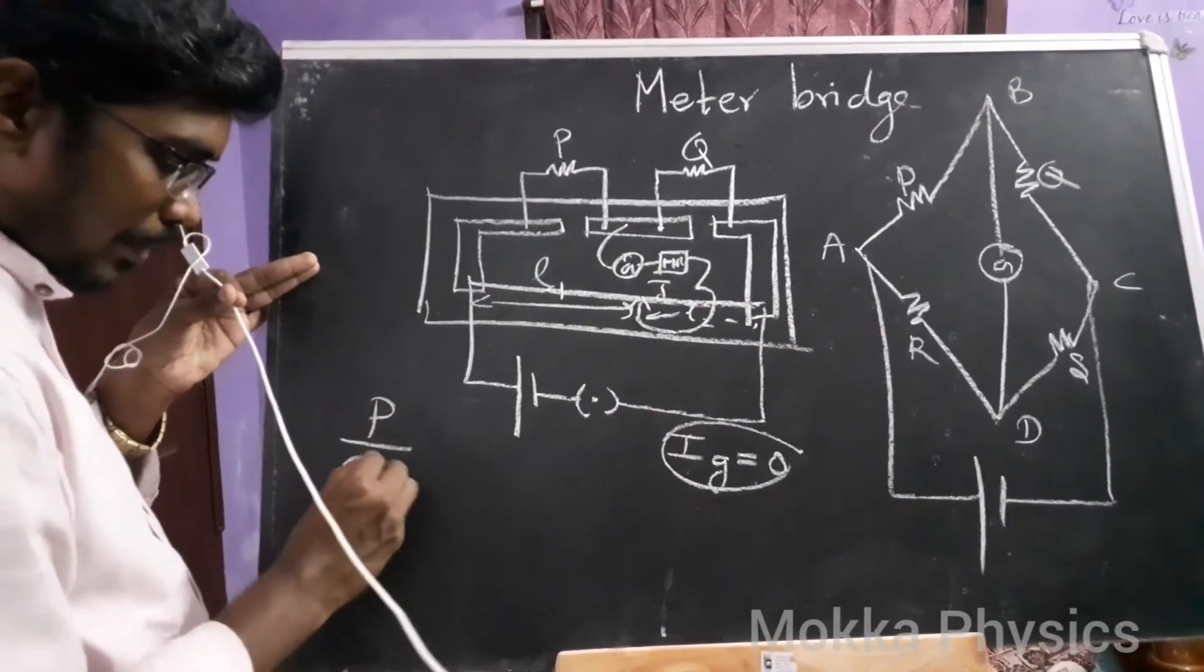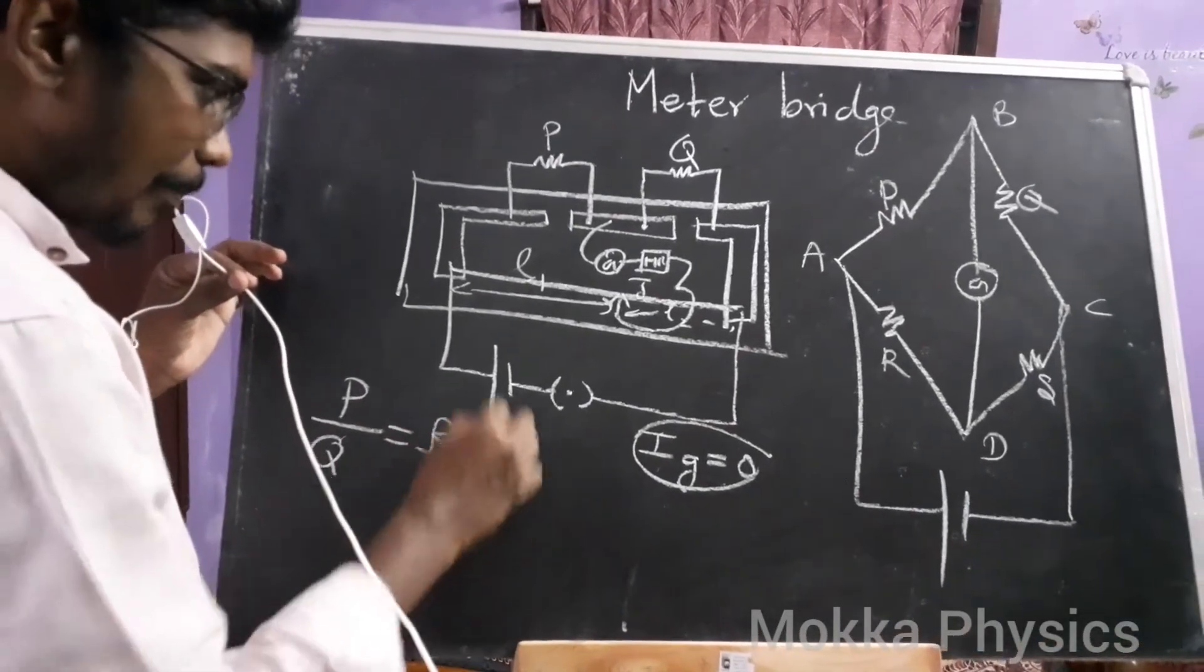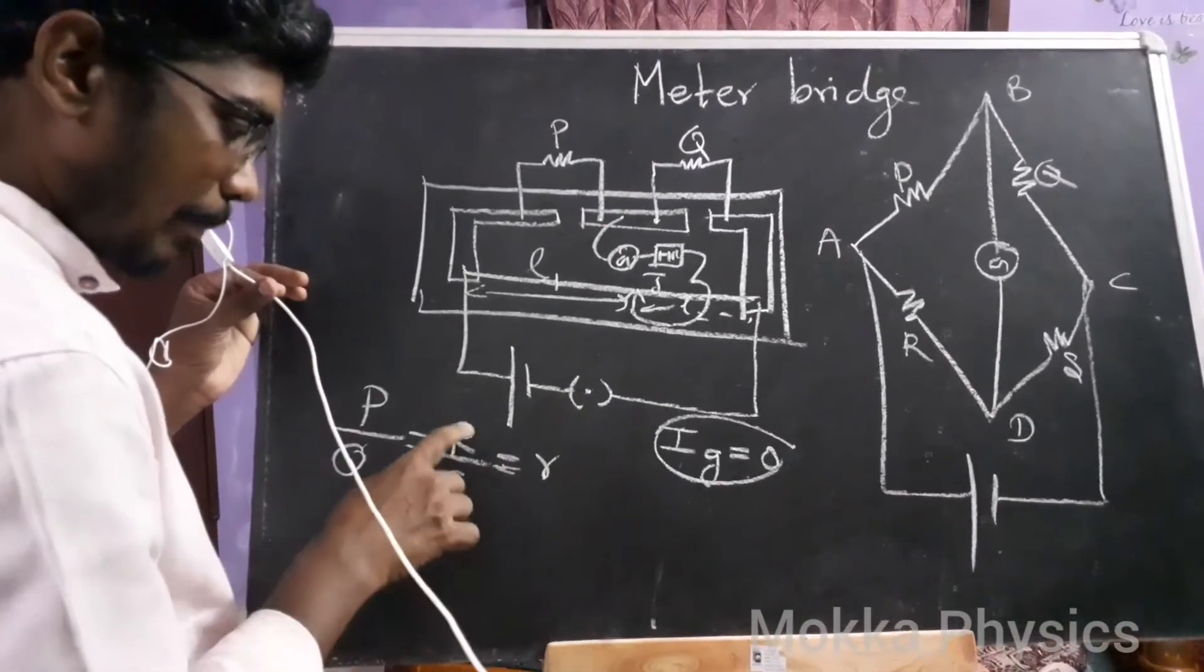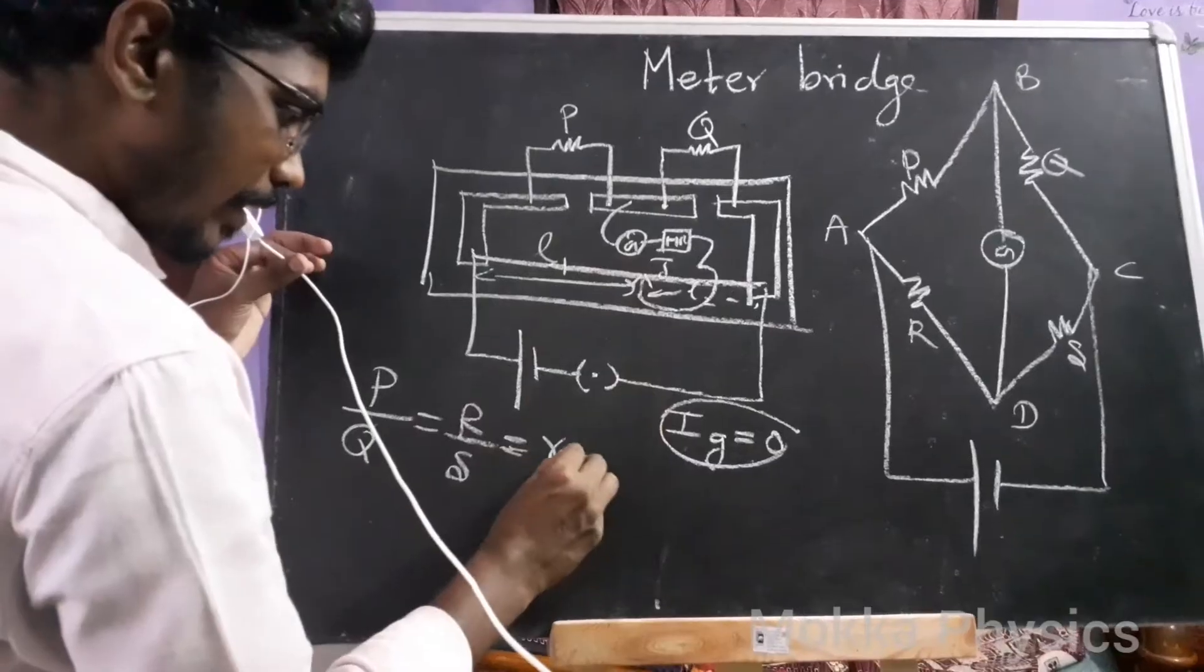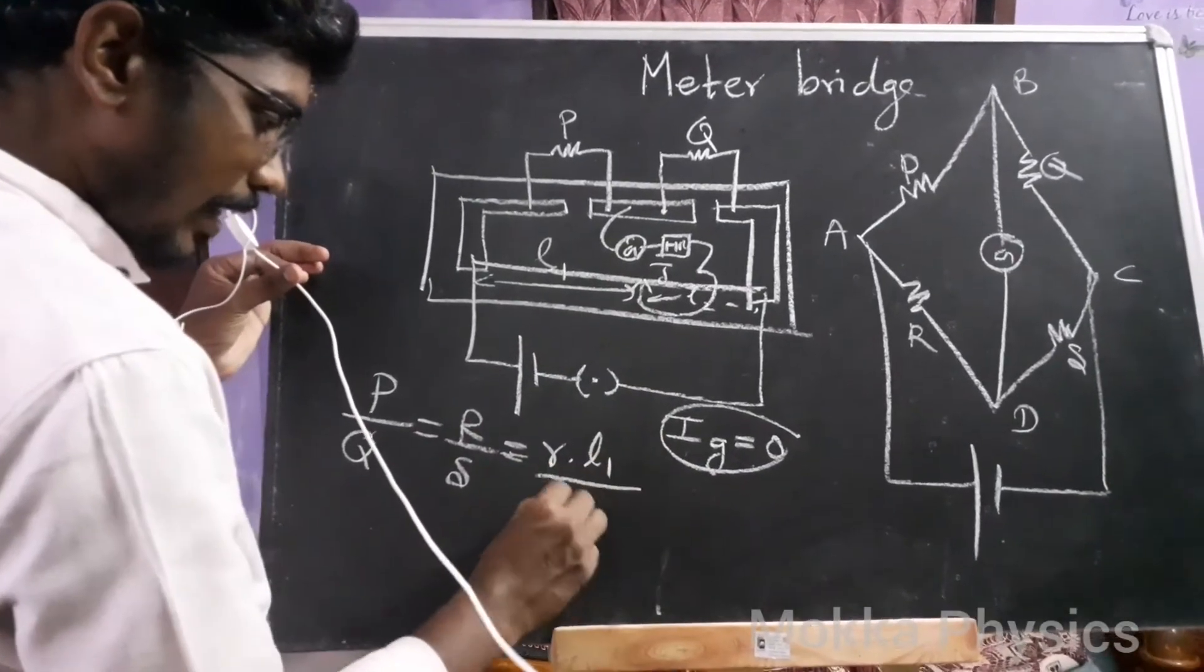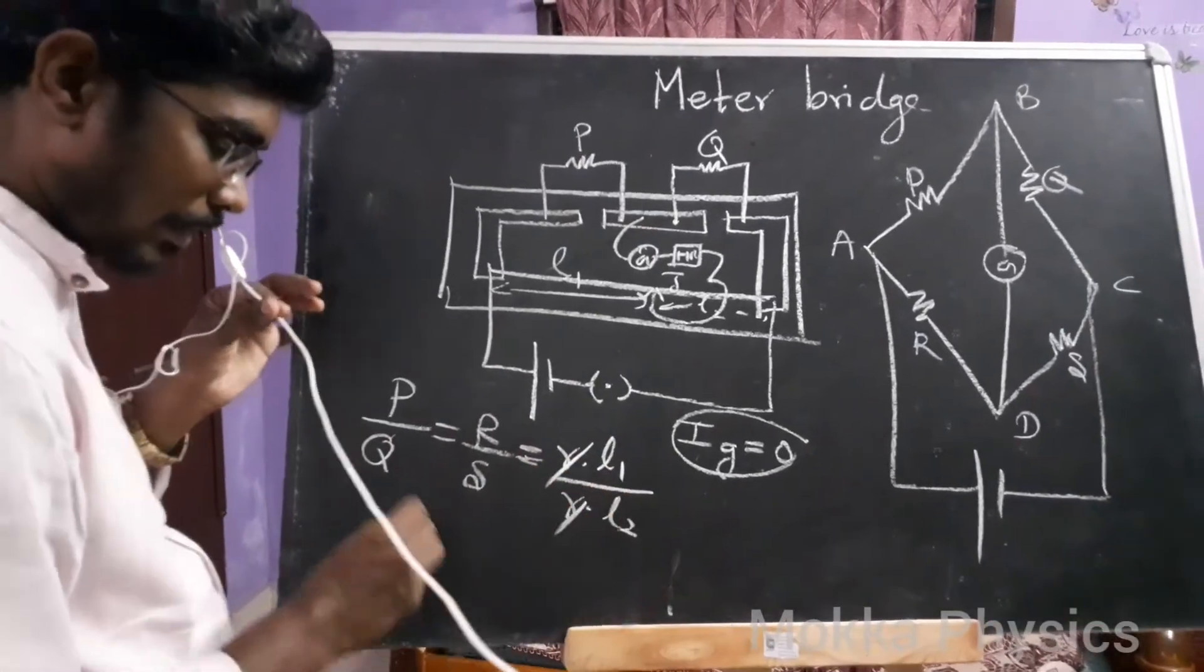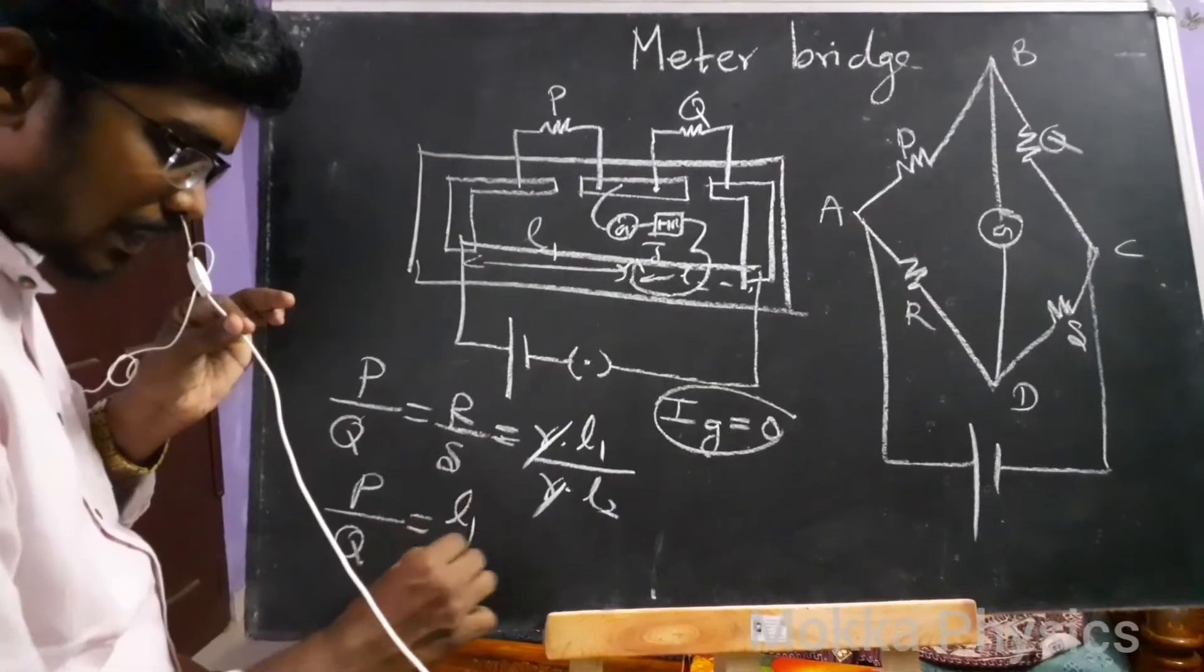The condition is P by Q equals R by S. The resistance of the wire is small r. If the resistance is R into L1 and R into L2, and resistance is proportional to length, you can cancel the R constant. If you cut it, P by Q will be equal to L1 by L2.